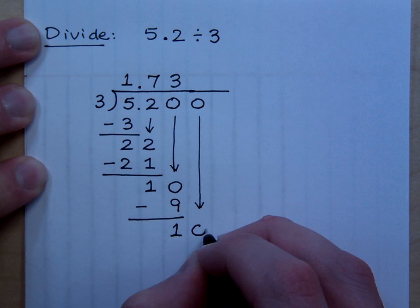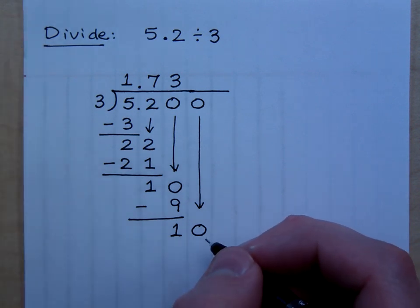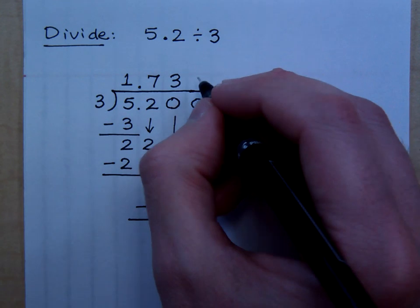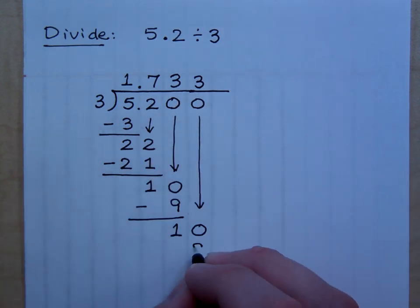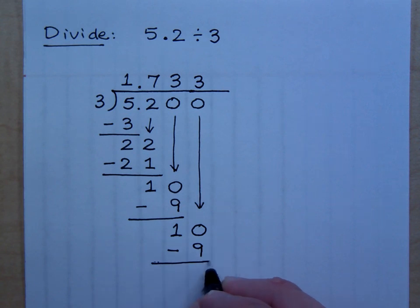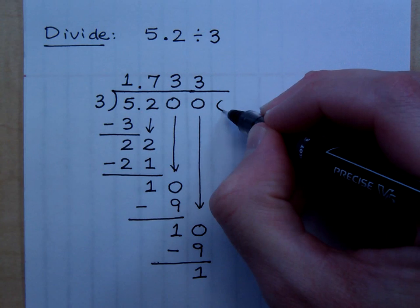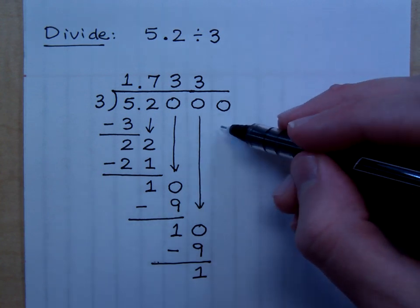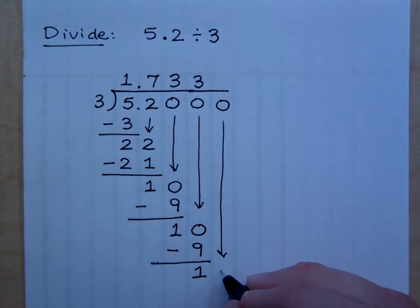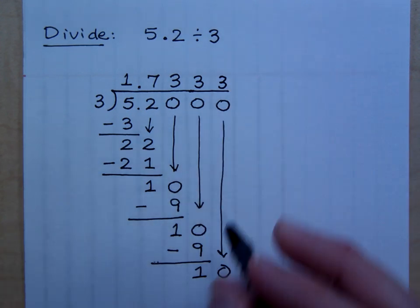So, 3 goes into 10 how many times? Boy, that sounds like I've already said that. It goes in 3 times. 3 times 3 is 9. Subtract that and I get a remainder of 1. You tell me to stop. Yeah, I think so. But Michael Jackson told me I couldn't stop. I don't think I've gotten enough yet. If I keep putting a 0, what's going to happen? I still keep ending up with the same set of numbers. The 3s keep going on.